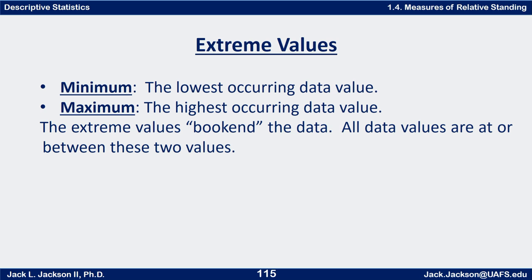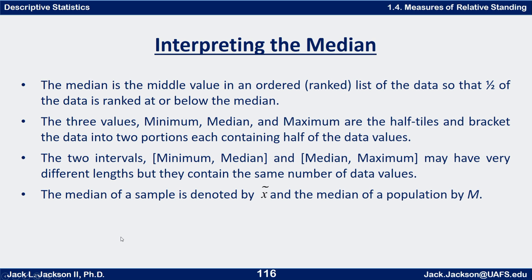Extreme values are very simple. The minimum is the lowest occurring data value and the maximum is the highest occurring data value. The extreme values sort of bookend the data — all data values are at or between these two values. You need these two values to encapsulate everything and put bounds on it. Simple but important statistics: the minimum and the maximum.